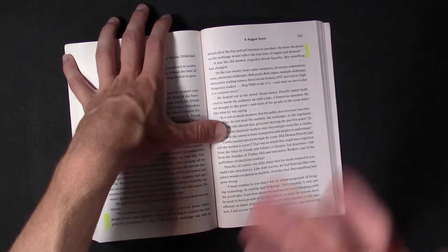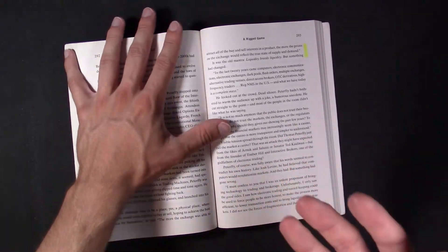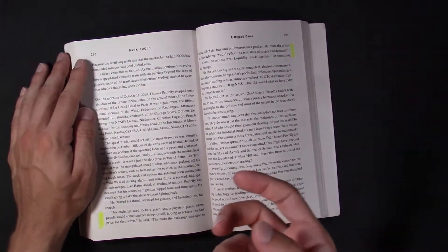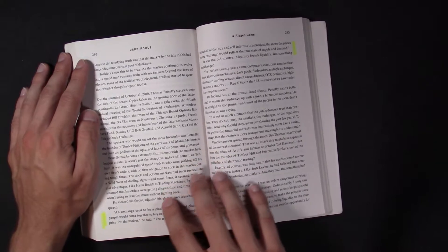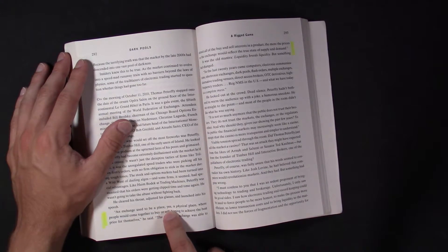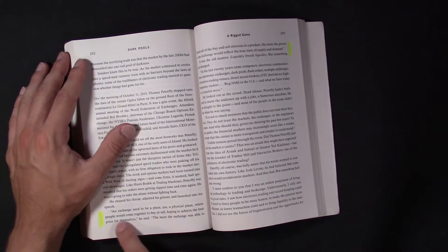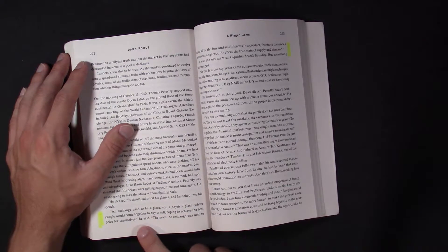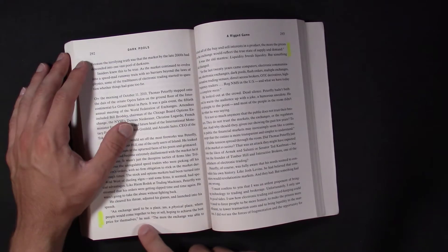We have to always remember why exchanges exist, why markets exist. I'll just read the quote. An exchange used to be a place, yes, a physical place where people would come together to buy or sell, hoping to achieve the best possible price for themselves, he said.